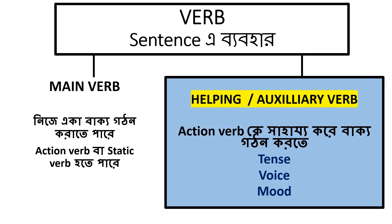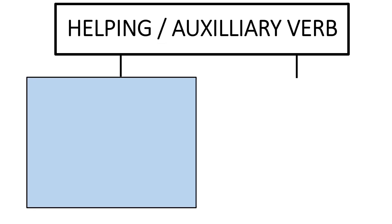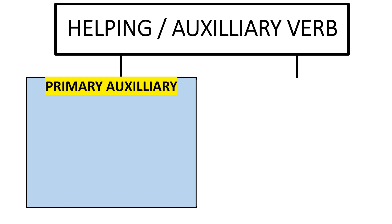The actual verb, written as action — how do you interpret that? The sentence determines the tense, determines the voice, and determines the mood. A helping or auxiliary verb can be a primary auxiliary verb.